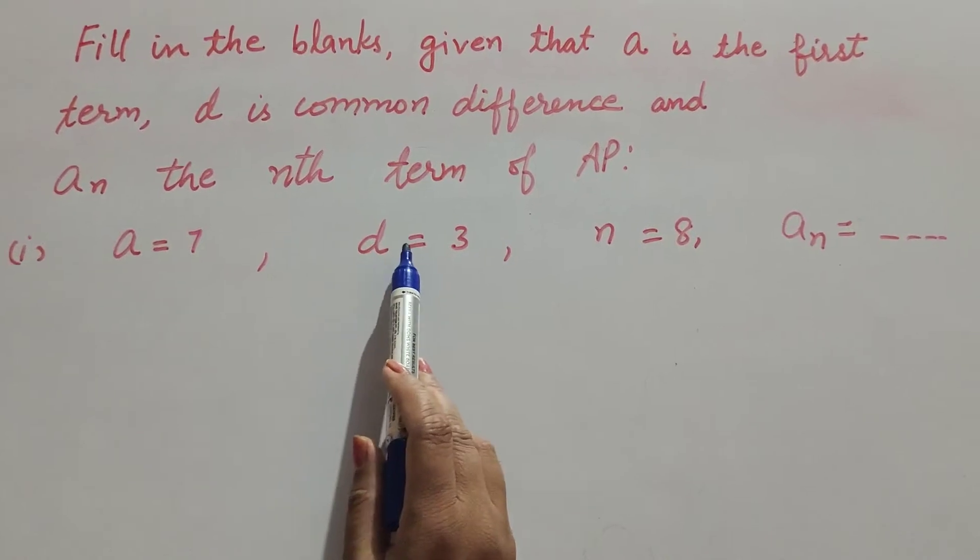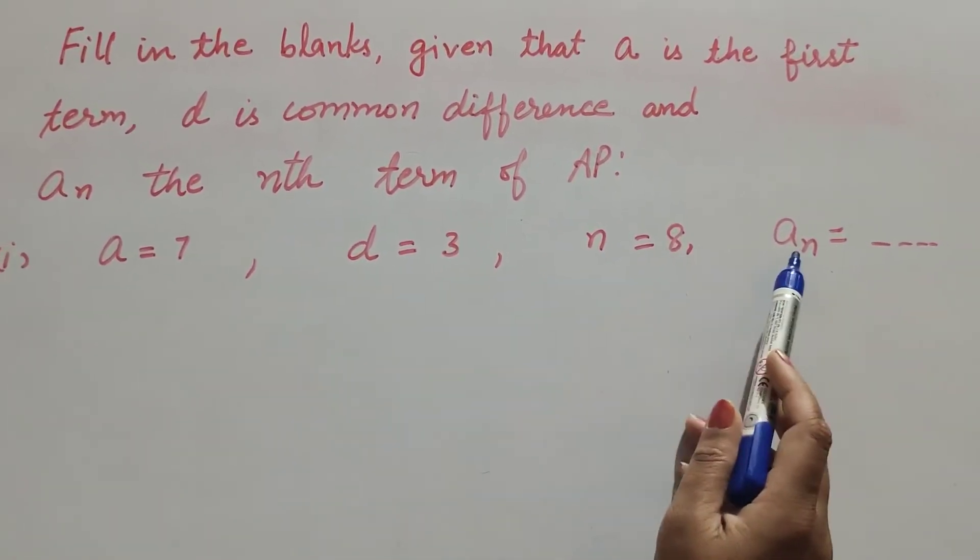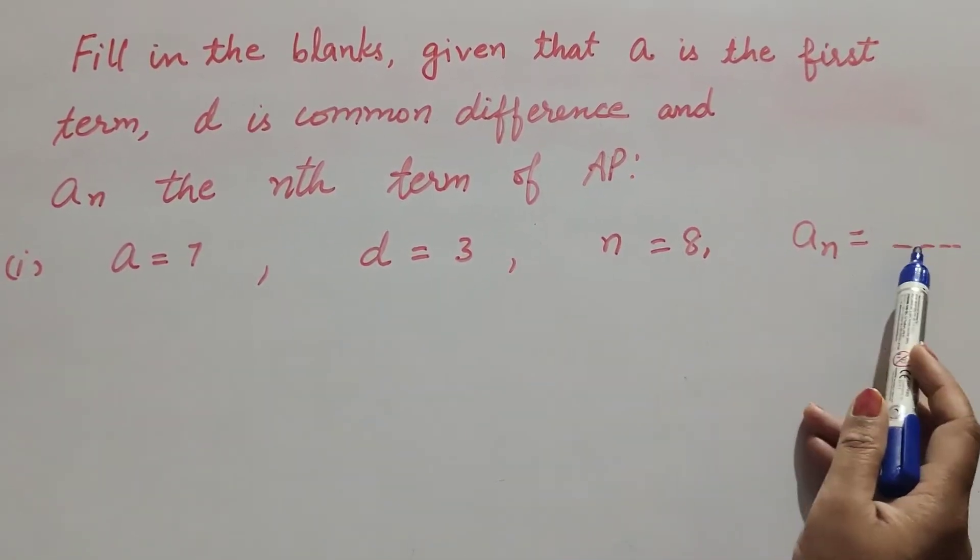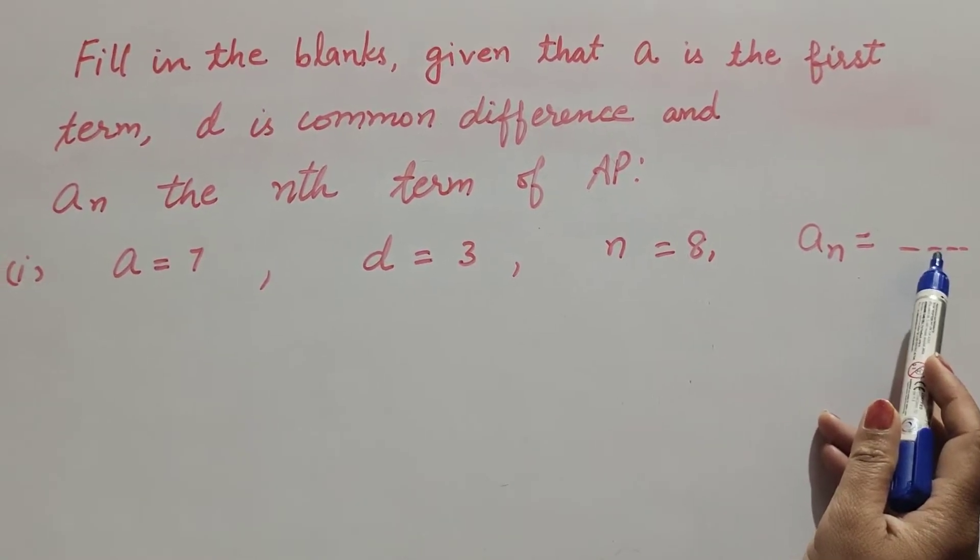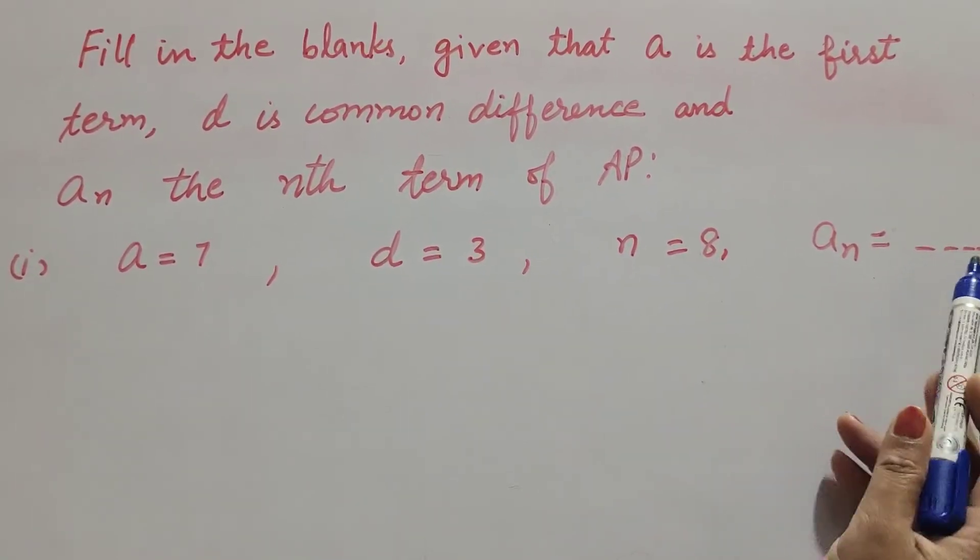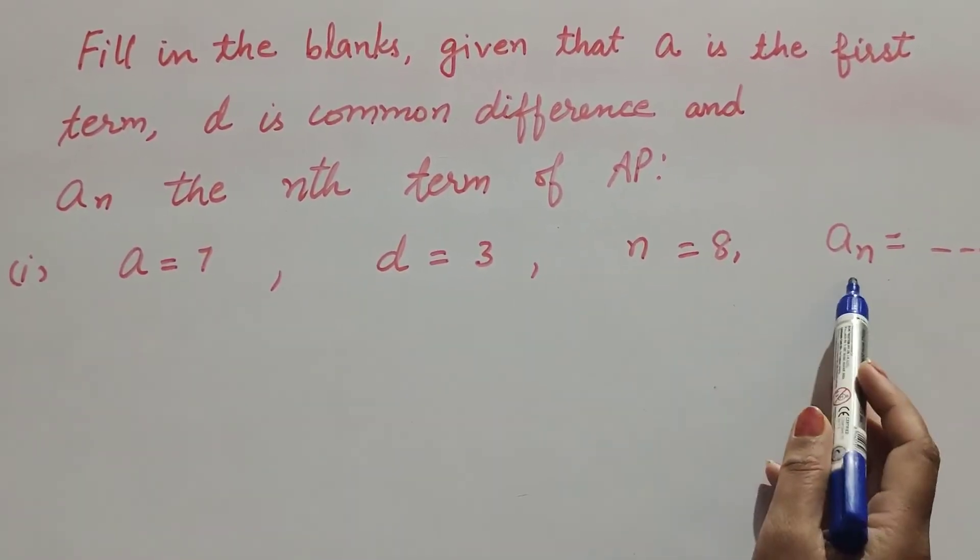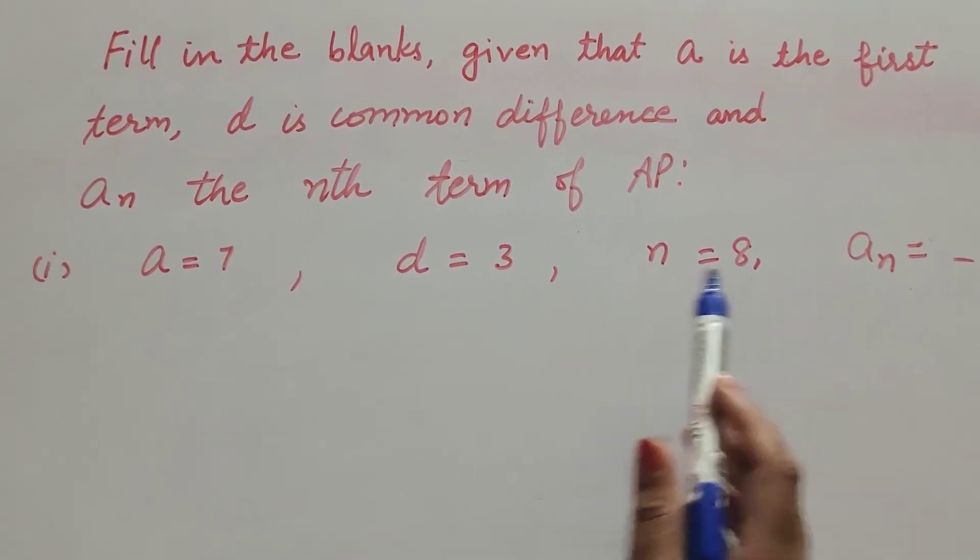In the first part, a is equal to 7, d is equal to 3, n is equal to 8, and we have to find a_n. So we have to find the nth term of the AP.